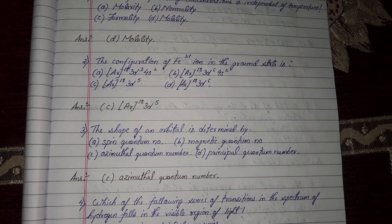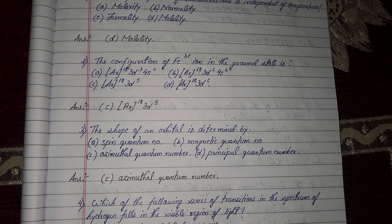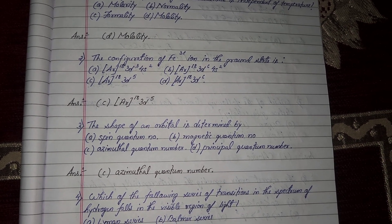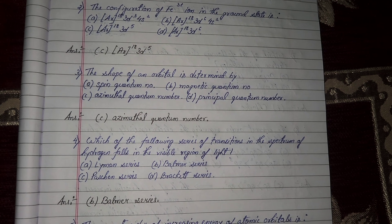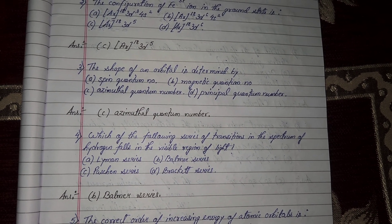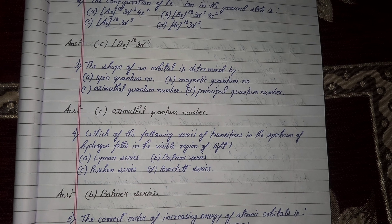Next question number 2, the configuration of Fe3 plus ion in the ground state is option number C, AR18 3D5 is your correct answer. Next question number 3, the shape of an orbital is determined by option number C, azimuthal quantum number.